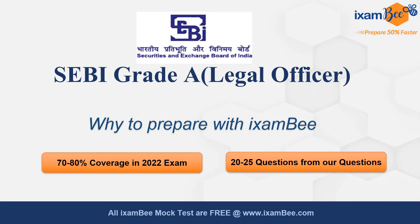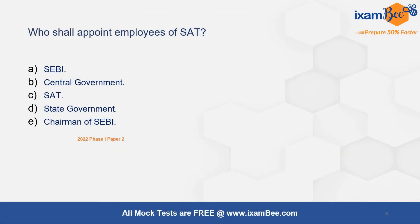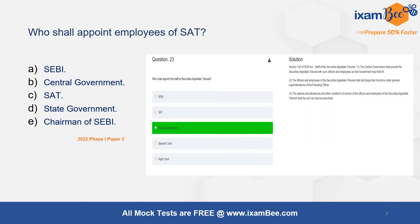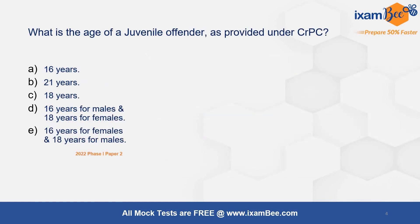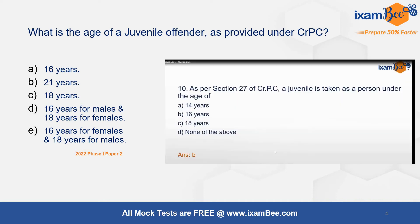Around 20-25 questions from both Phase 1 and Phase 2 together were similar to what we provided in our various question formats — chapter test, section test, and mock test. For example, there was one question: 'Who shall appoint employees of SEBI tribunal?' This was in Phase 1, Paper 2 in 2022, and we had a similar question in one of our mock tests. Again, there was a question: 'What is the age of a juvenile offender as provided under the Criminal Procedure Code?' And we had discussed a similar question in our live classes. I have attached the question papers in the description below so you can also see the coverage we have provided.